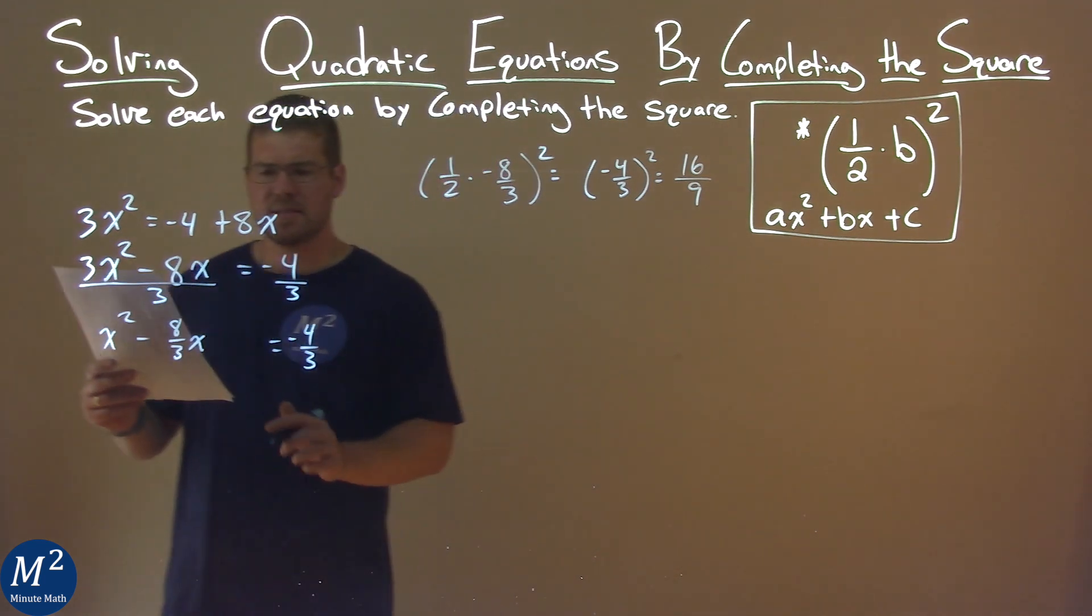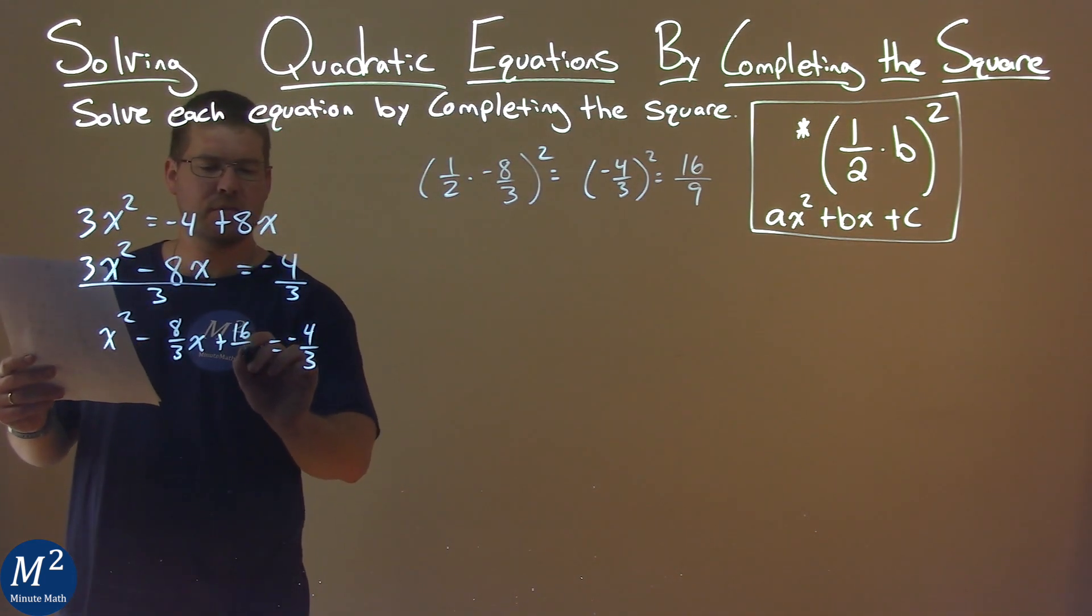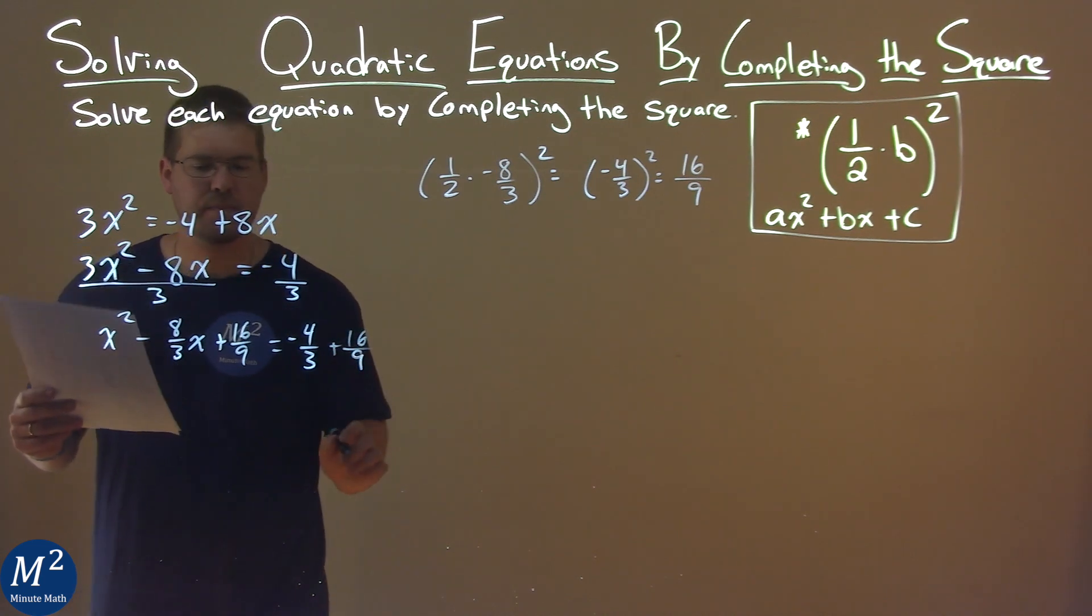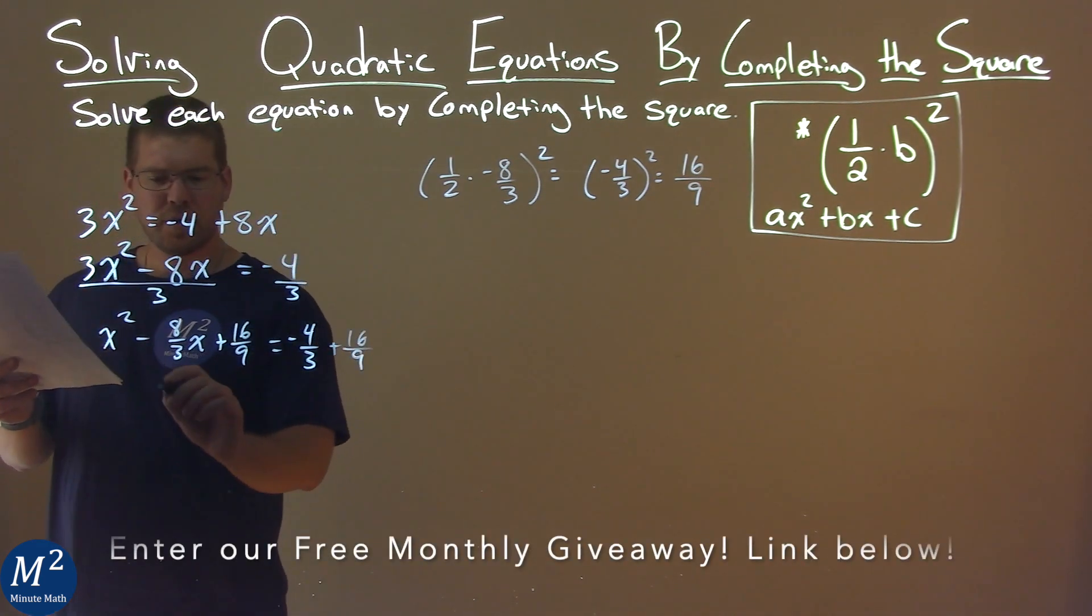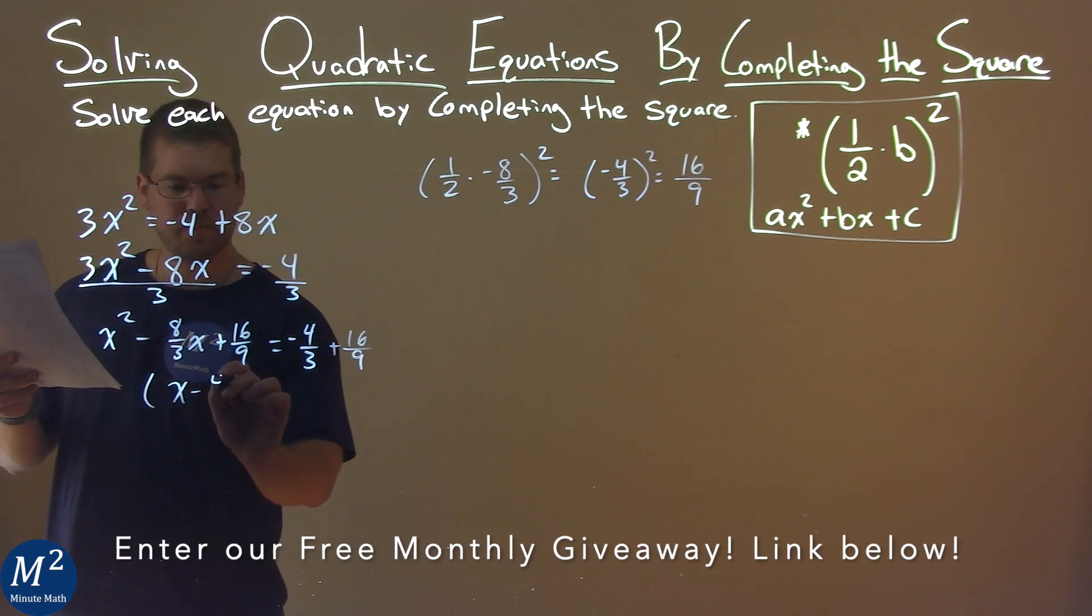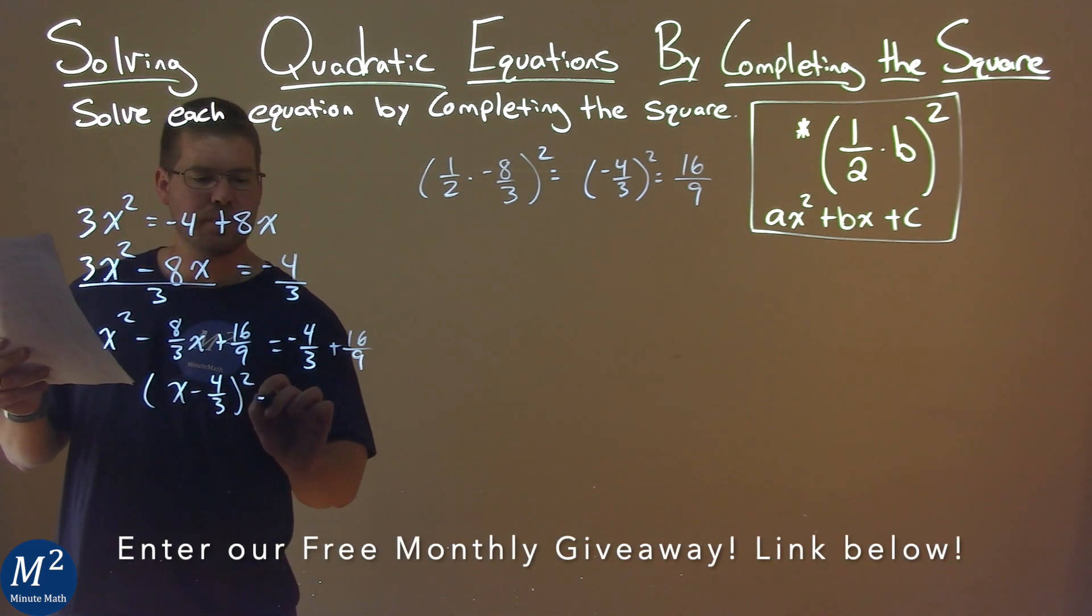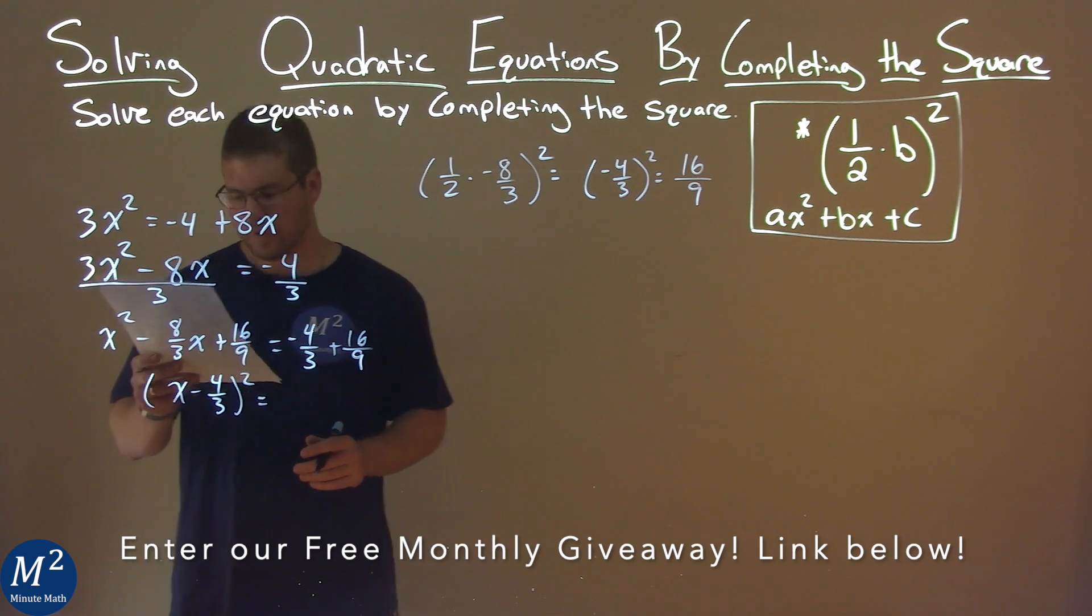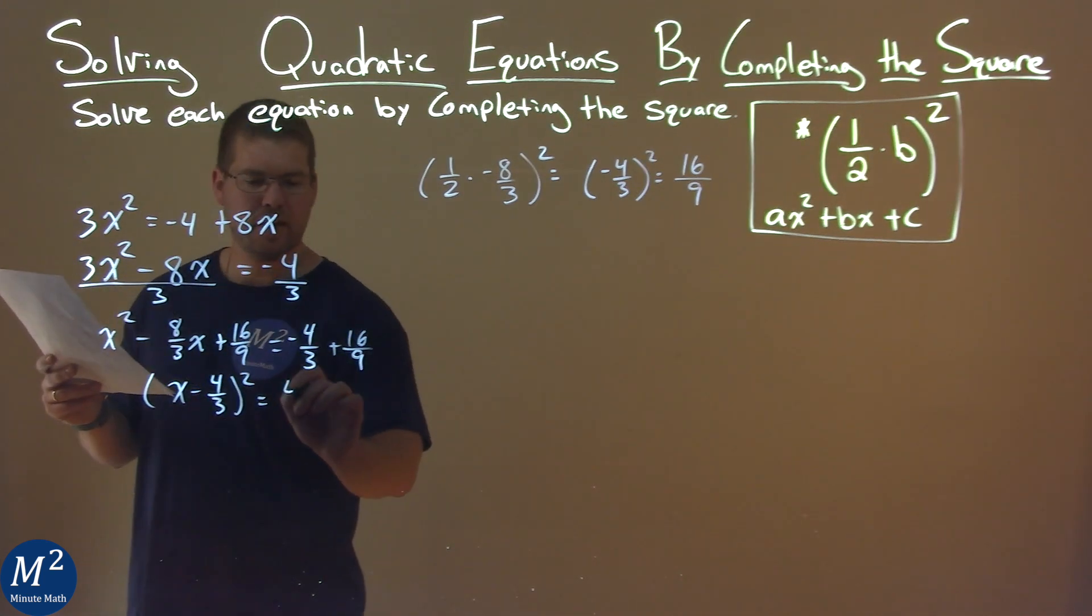So I'll take that 16/9 and add it to both sides of the equation. In doing so, the left-hand side becomes a perfect square: (x - 4/3)² equals, well, -4/3 + 16/9 comes out to be 4/9.